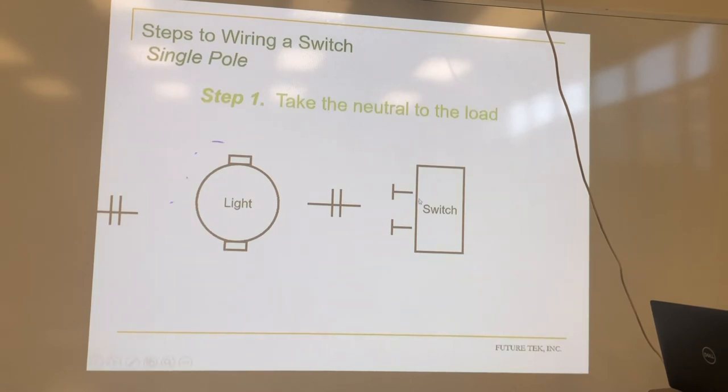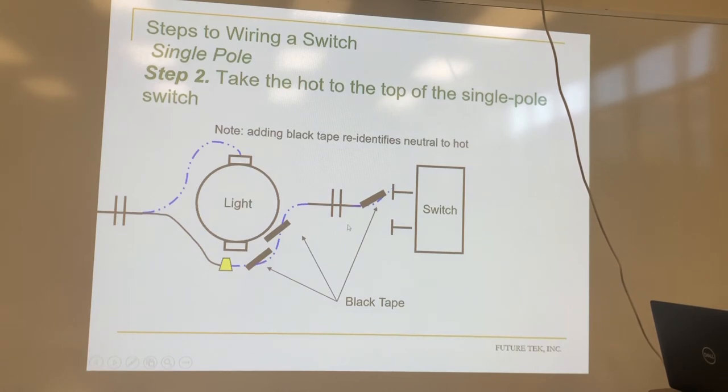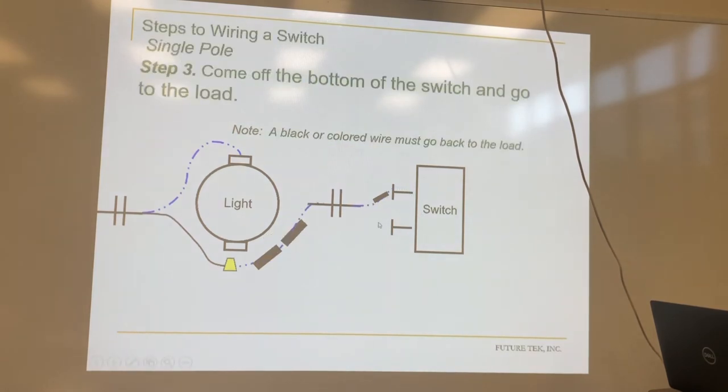So our 12-2 coming in to the light. Our neutrals, obviously, just go straight to the light. This is our hot. It's going to wire nut to the white going to the switch. Okay, but we are going to re-identify this white wire with black tape. You can do that. You can use white wire as a hot, just as long as it's identified with black. So this is our line coming into the switch, right? And then we're going to use the black wire as our load and go to the light. And it makes kind of like a loop. That's why it's called a switch loop, because you're just feeding down to it and back.